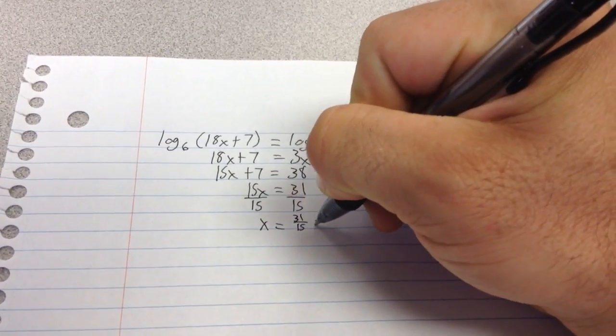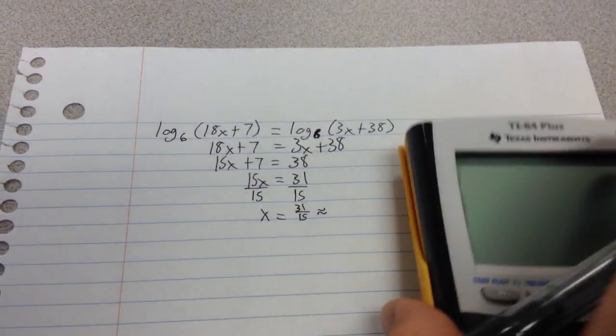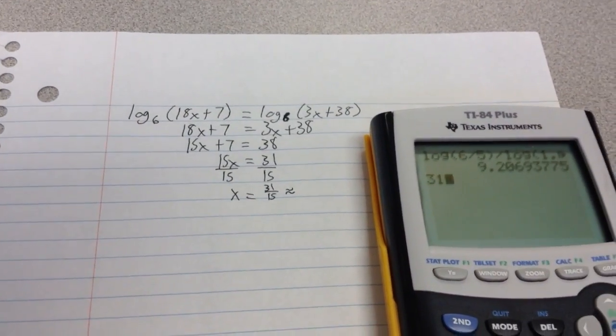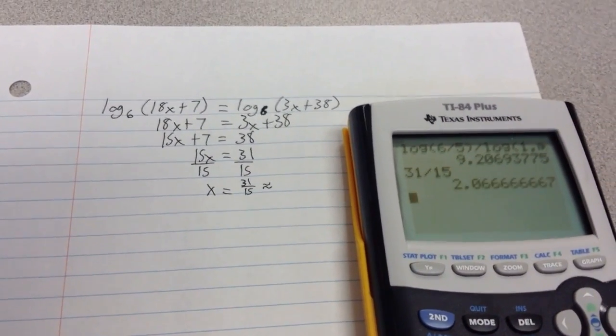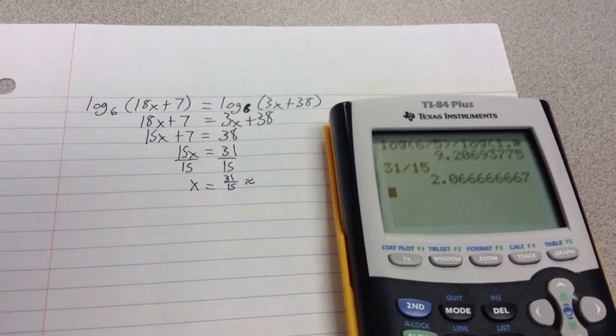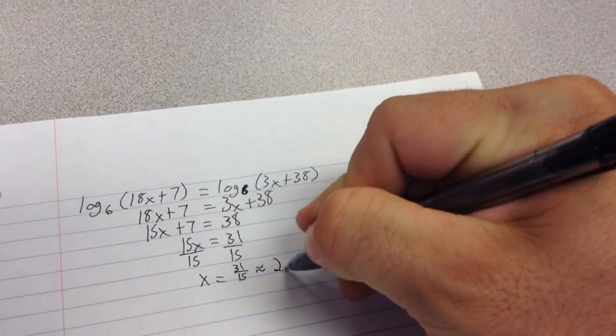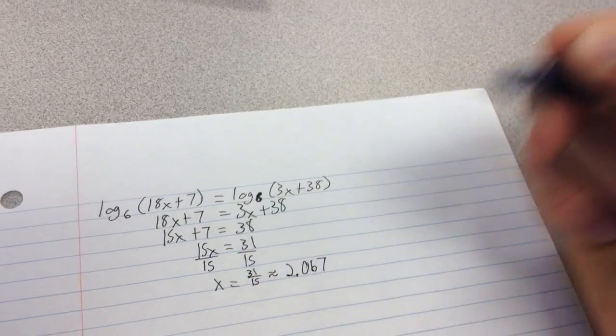If you needed an approximation for that, you could take out your calculator and do 31 divided by 15. If you take that out, you end up with 2.066666 or 2.067 approximately for your solution.